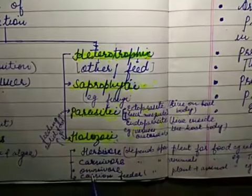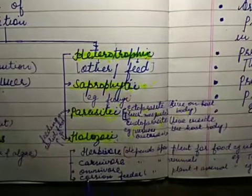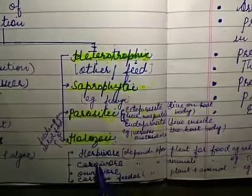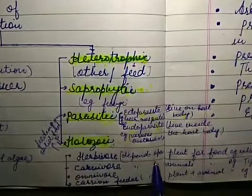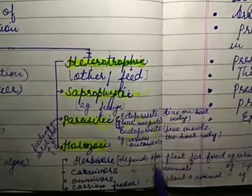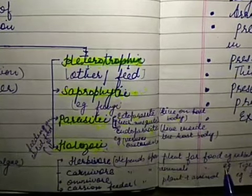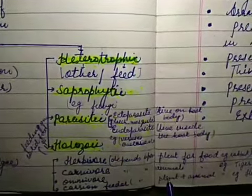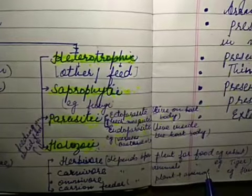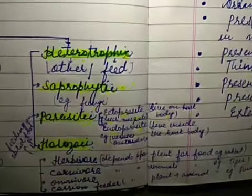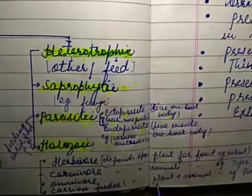Now holozoic organisms are of four types: herbivores, carnivores, omnivores, and carrion feeders. Herbivores are those animals who depend upon the plants for food. The same way, carnivores depend on animals for their food. And omnivores depend on plants as well as on animals for their food. For example, human beings. And carrion feeders are scavengers.